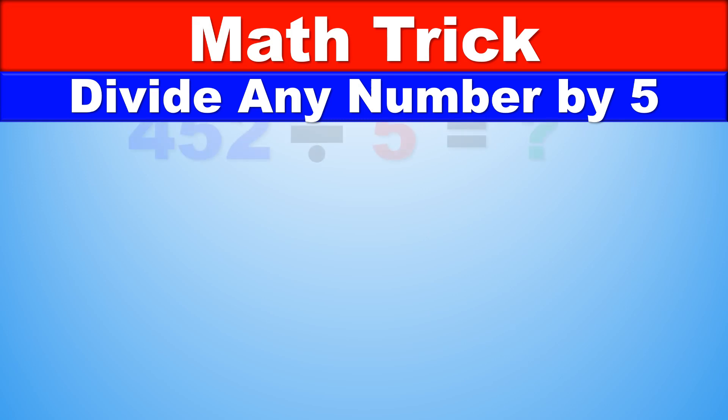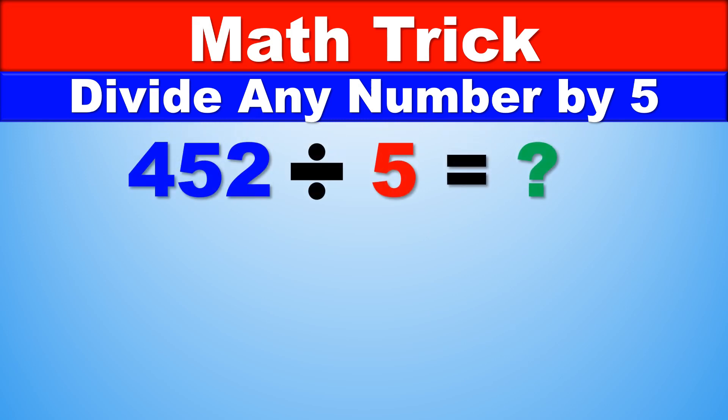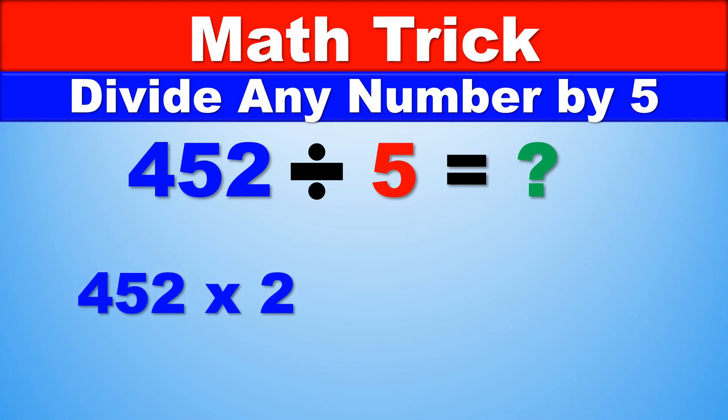Let's take a look at another example. 452 divided by 5. Again, the first step here is to multiply by 2. And so, 452 times 2 is 904.